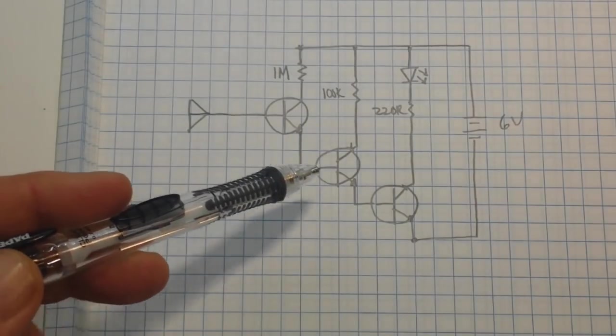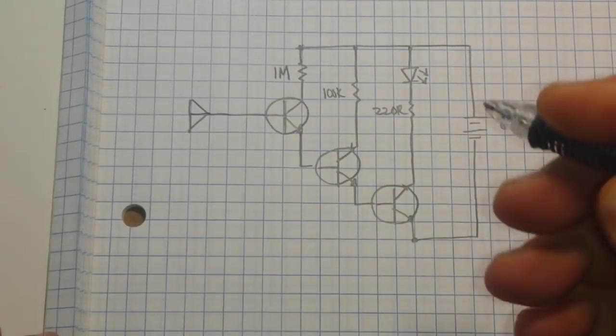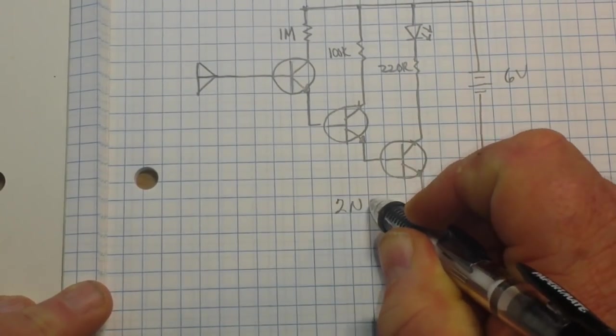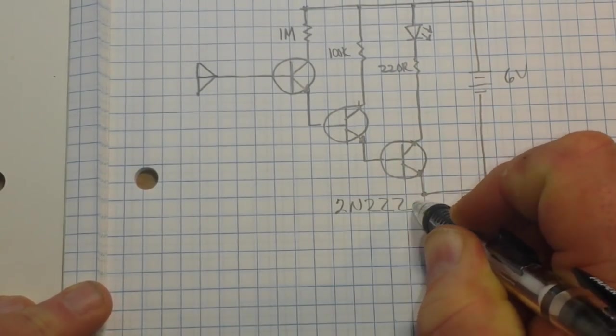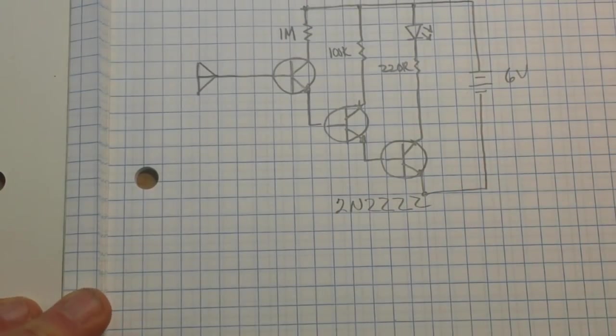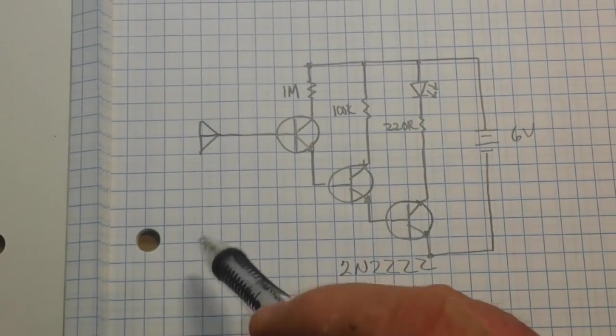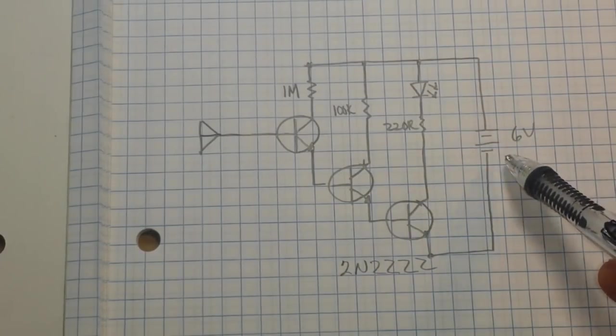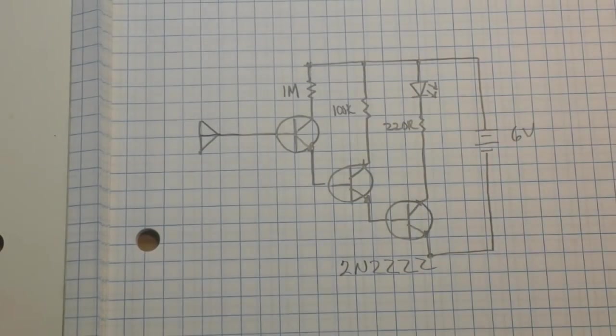As you can see, it uses three NPN transistors, and in this case we are using two N2222s. We have an antenna, an LED, a battery, and some resistors.